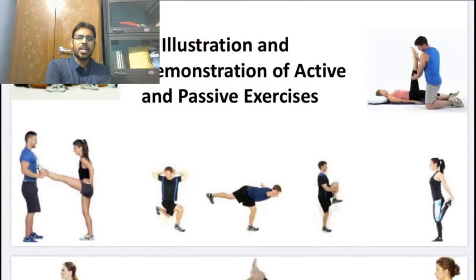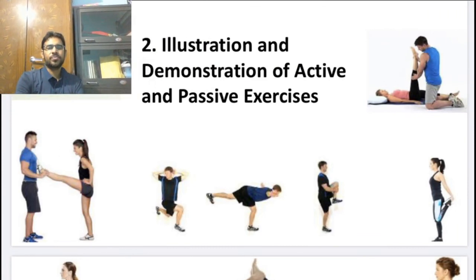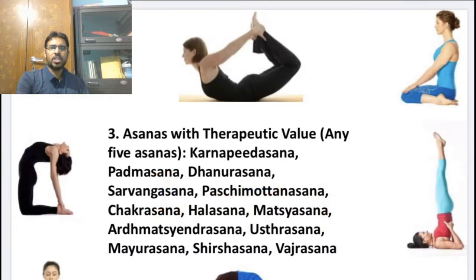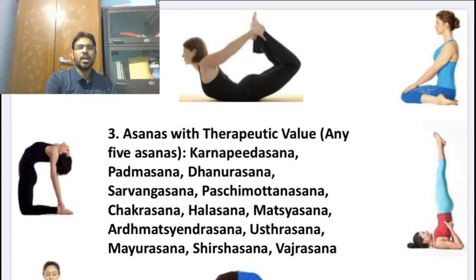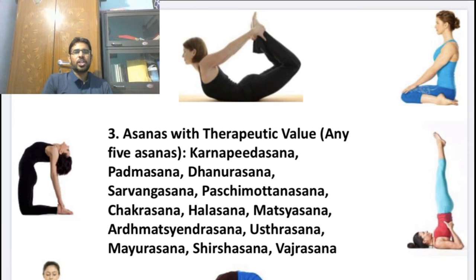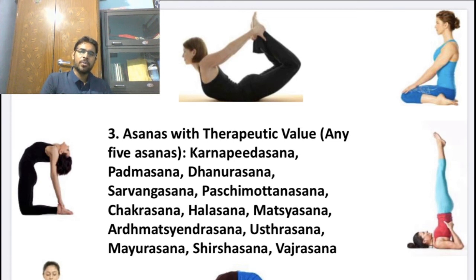The second practical unit covers illustration and demonstration of active and passive exercises. The third unit covers yogic asanas which help to improve or correct your body posture and body pain — asanas such as Kandharasana, Padmasana, and Dhanurasana. There are a total of 14 asanas in this unit, which will help improve your fitness as well as your mental state.